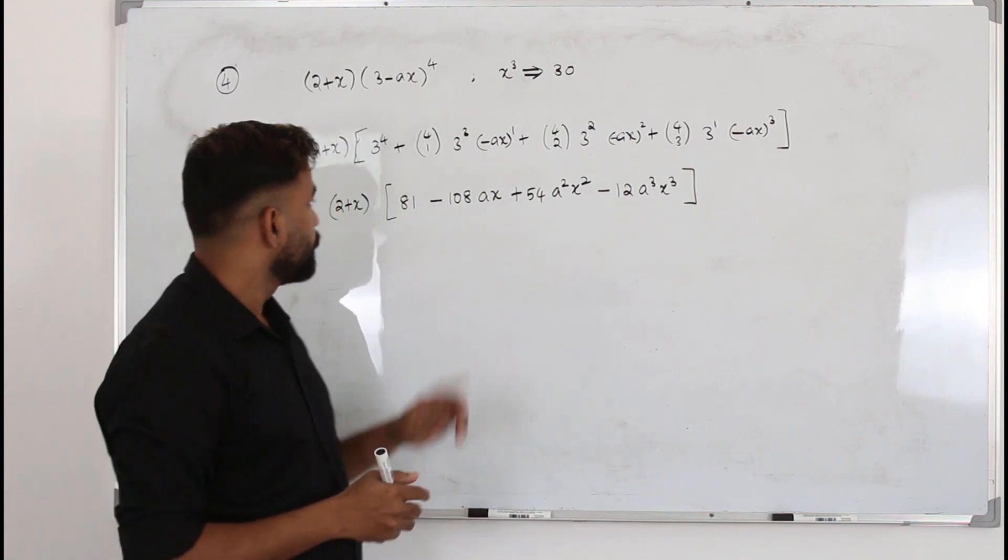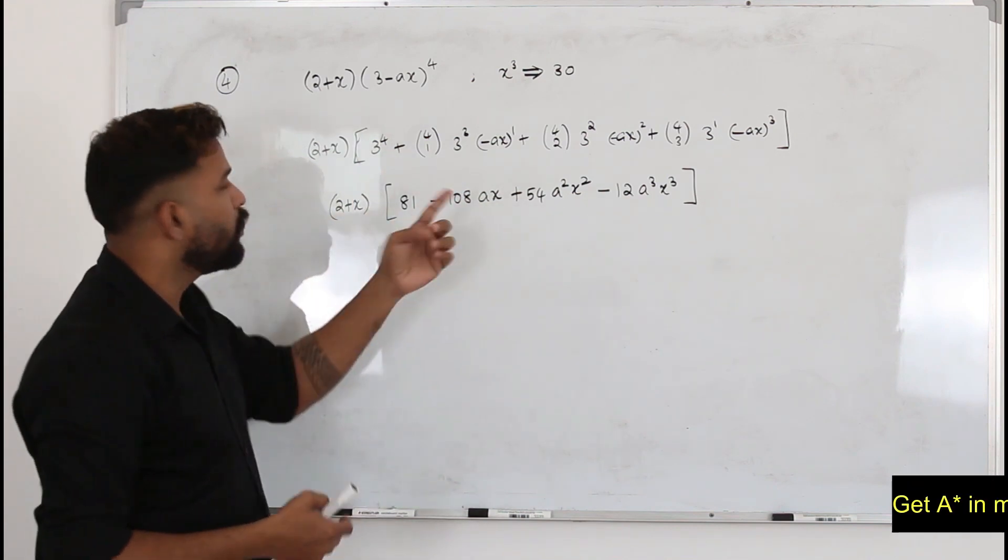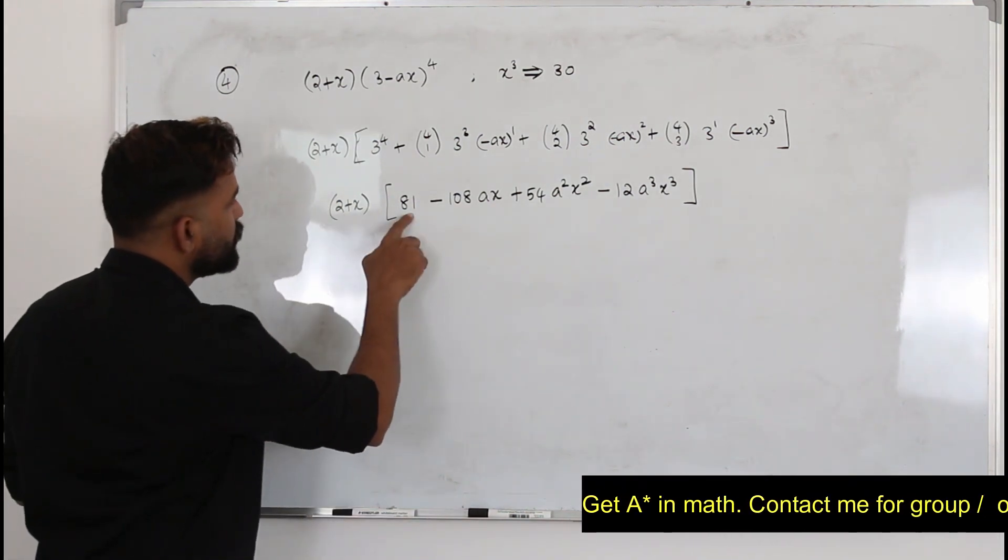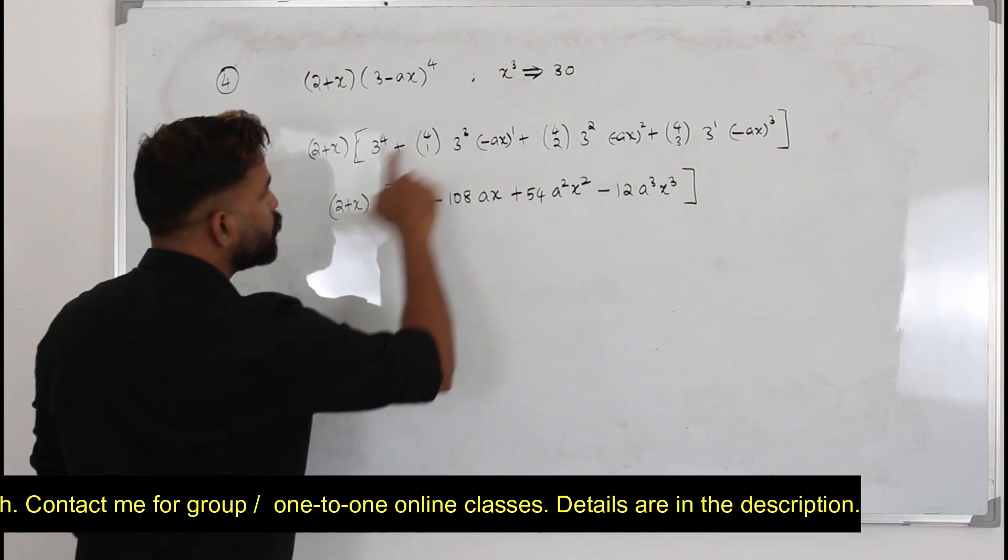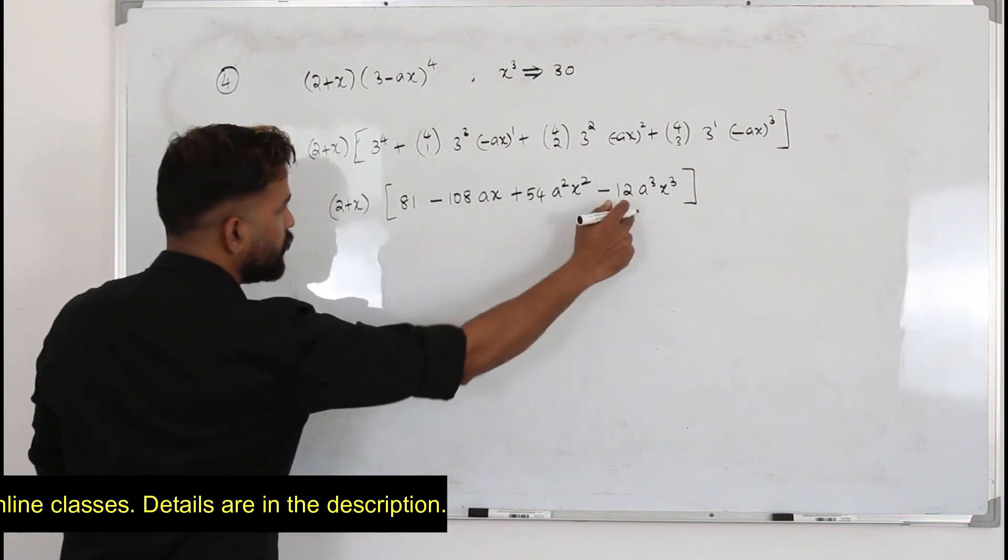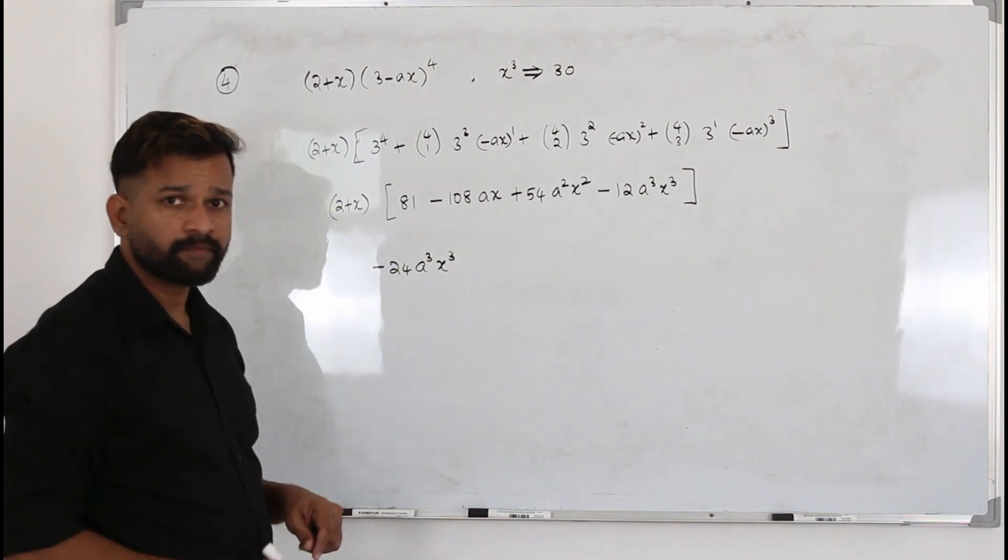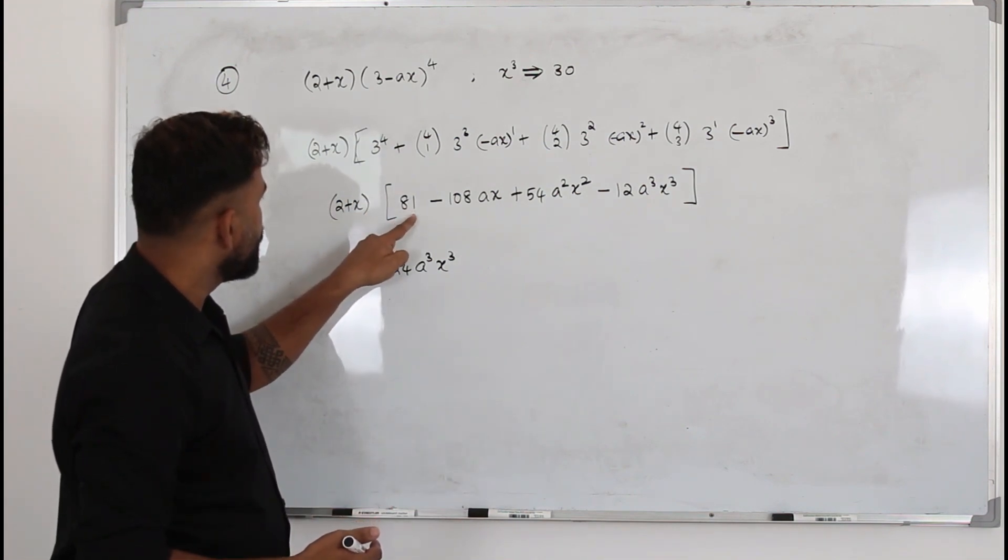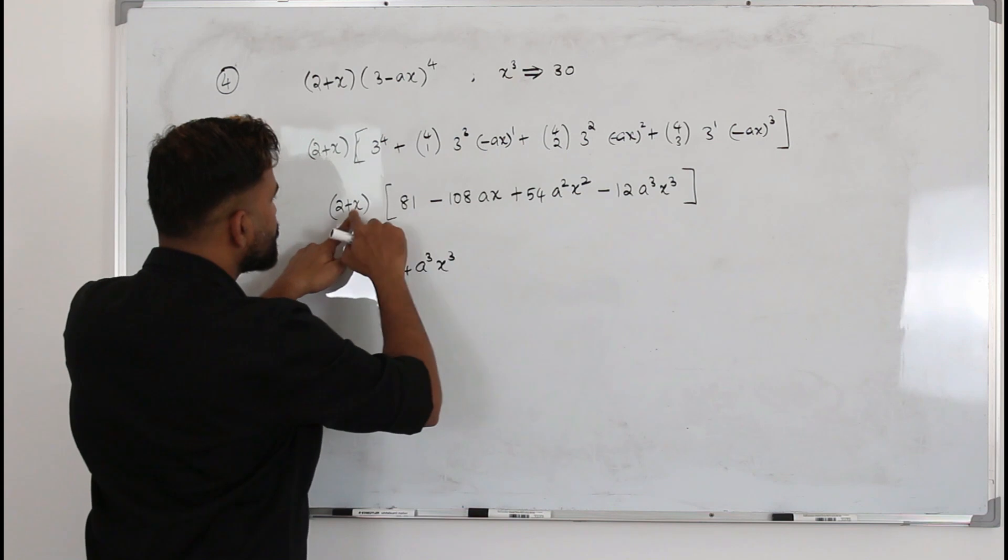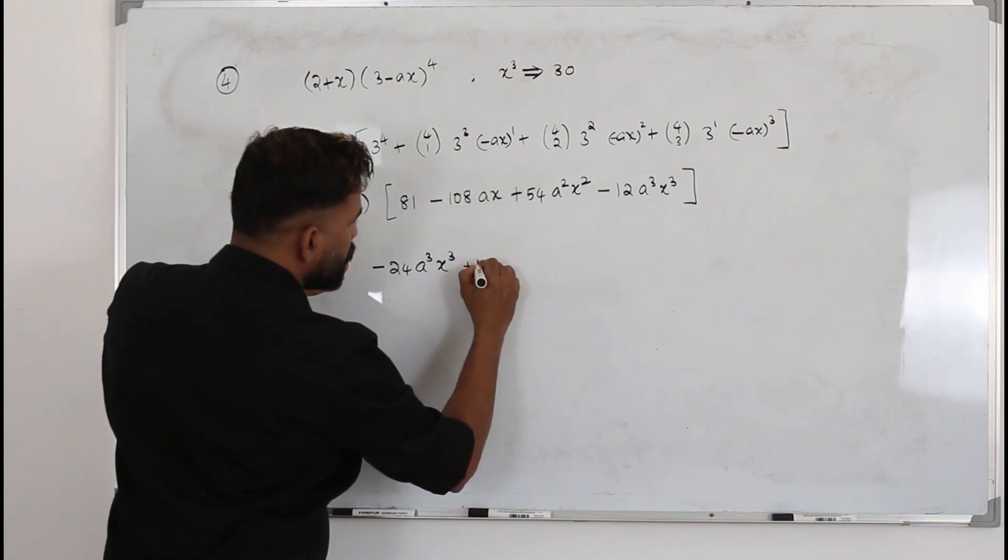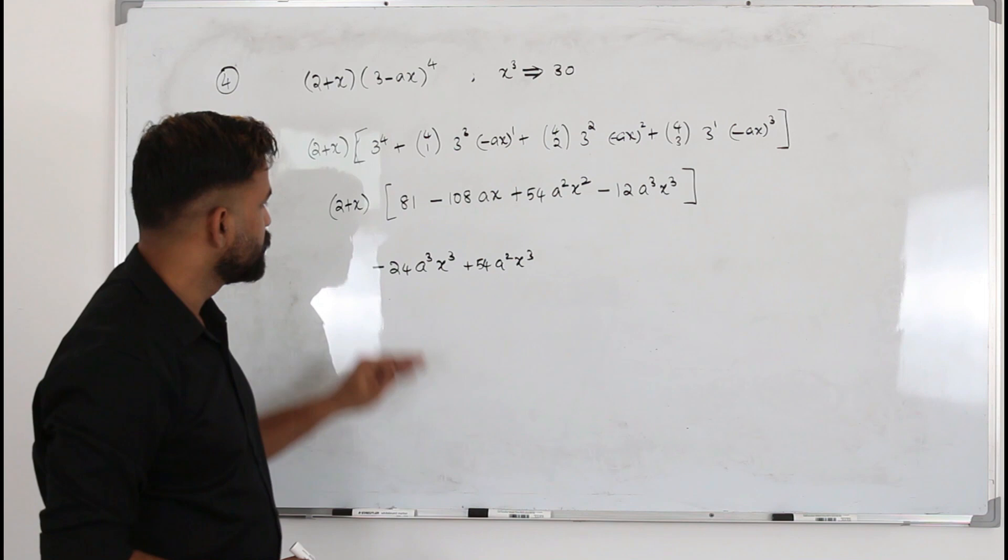Or, you've got to be a little bit smart here. You don't need to open the bracket and multiply everything, because we are concerned about only the x³ term. So take only the x³ term. When you multiply 2 by this, it's a constant. 2 by this is a term involving x, we don't need that. x², we don't need. 2 times this will give you x³. So 2 times this will be -24a³x³. The same way, take the second term. When you multiply by 81 you have x, x², x³. So we need only this term: x times this one, which is 54a²x³. When you multiply the next term, it's x⁴, we don't need that. So you see, we got the x³ term.